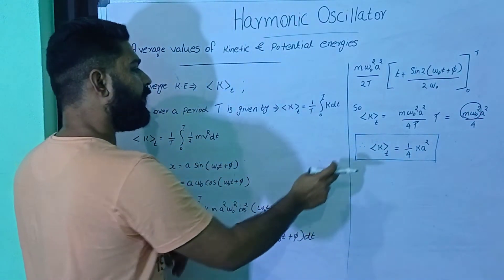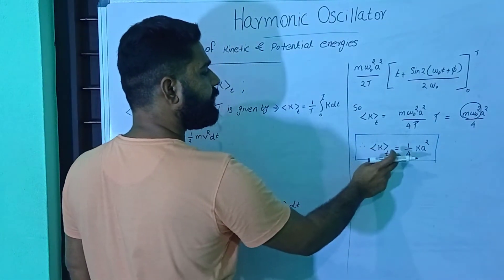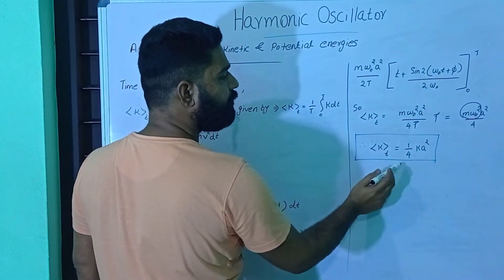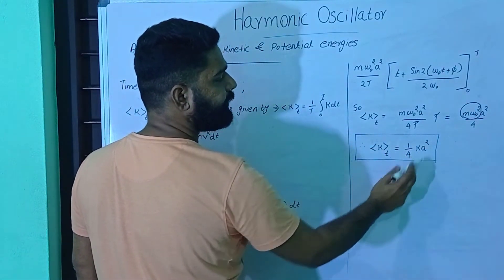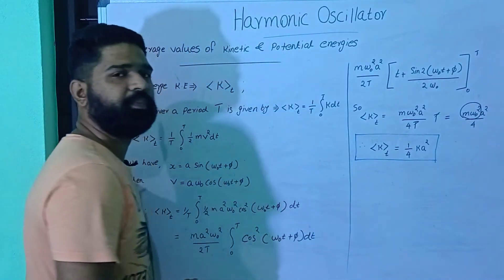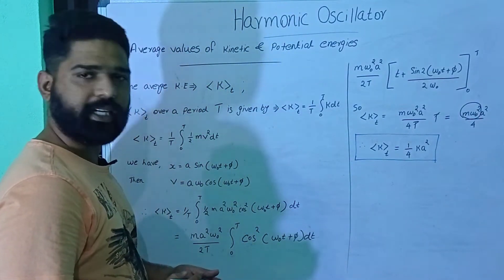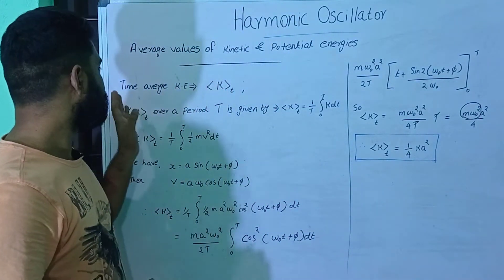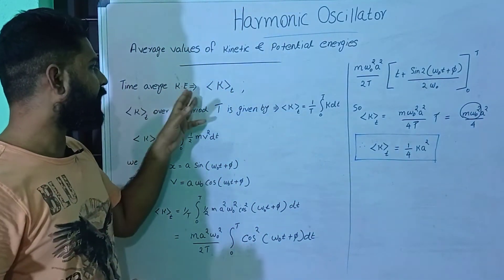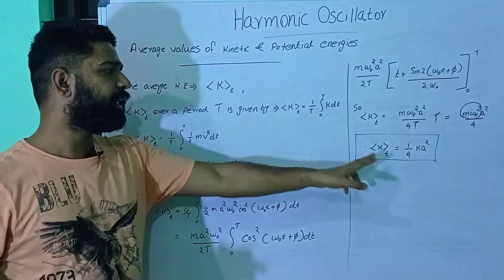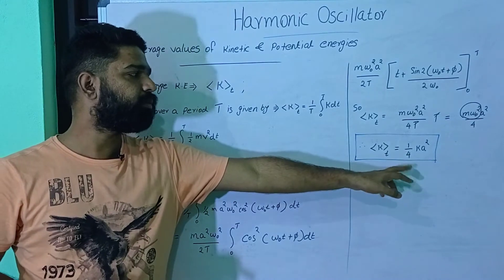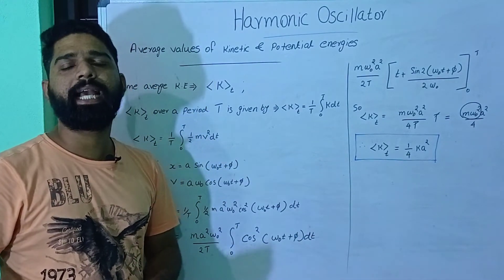The time average kinetic energy is equal to (1/4)ka². So the time average kinetic energy is equal to (1/4)ka².